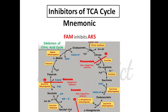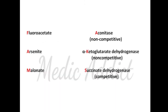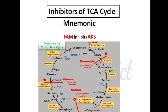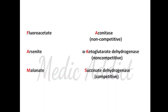The mnemonic for it is FAM inhibits AKS — fluoroacetate inhibits the aconitase enzyme, arsenite inhibits the alpha-ketoglutarate dehydrogenase enzyme, and malonate inhibits the succinate dehydrogenase enzyme.